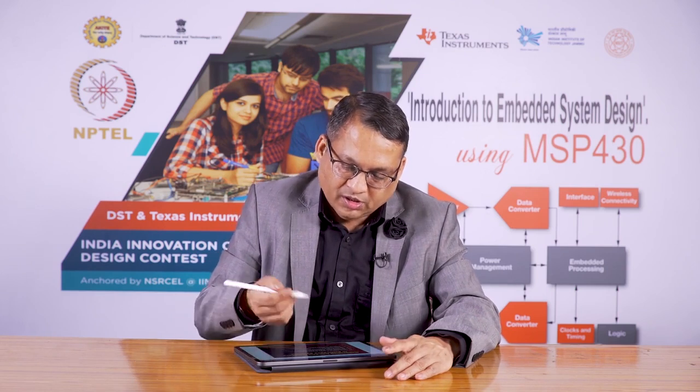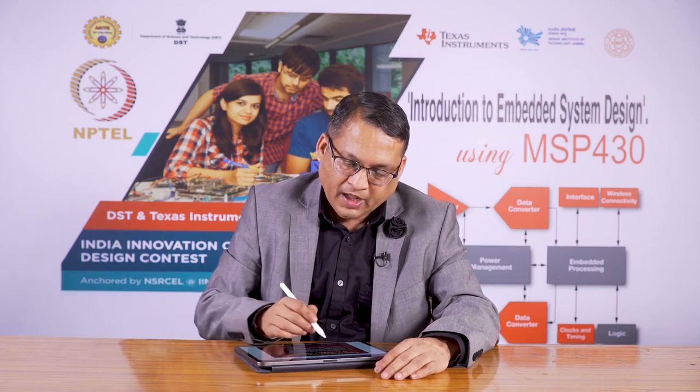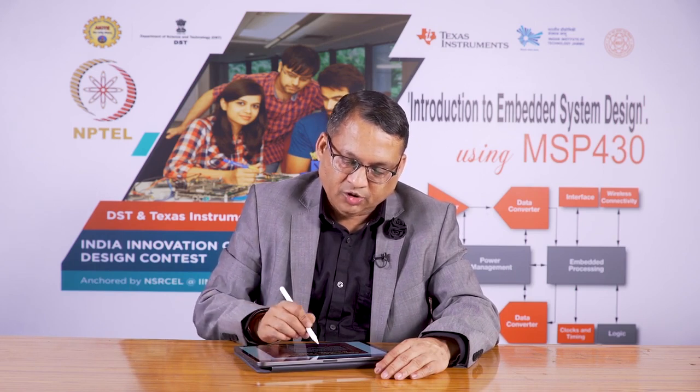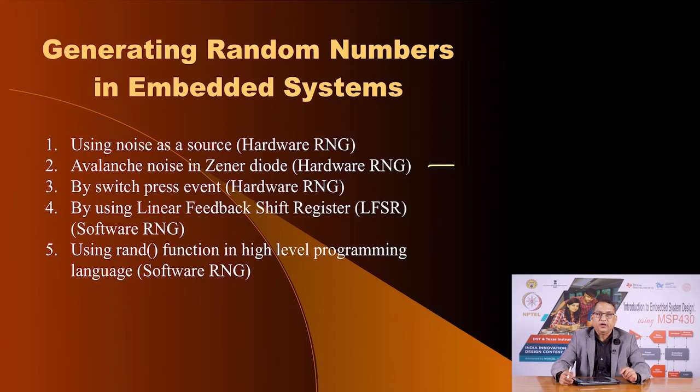Now what are the various methods by which you can generate such random numbers? One is using noise because noise is random. So if you sample that noise you would get a value which is random and therefore this could be a source of your random number. You could use for that noise source a high value resistor. You could sample external sound and so on. Another source of such hardware noise is through a zener diode. You could use a switch to stop a high frequency counter - the value in that could be random if the switch press is an asynchronous event, that is a human press.